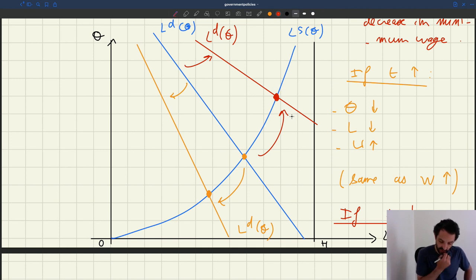Unemployment would reduce. Tightness would increase. And employment would increase. So same thing as dropping the minimum wage.